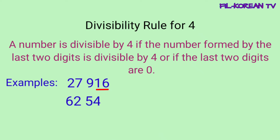Another example: 62,540. The last two digits formed a number 40. 40 is a multiple of 4, so divisible by 4 ito. Therefore, the given number 62,540 is divisible by 4.